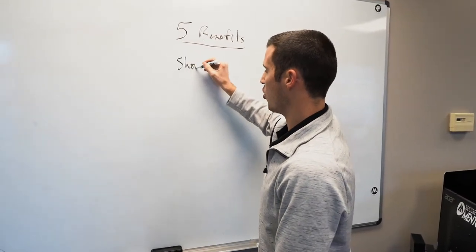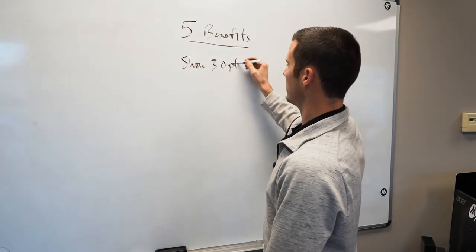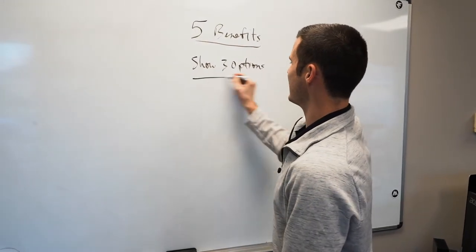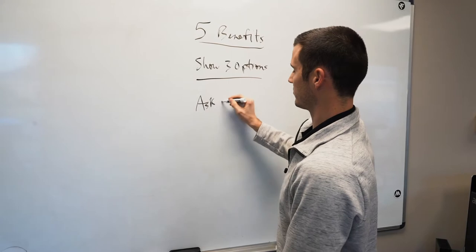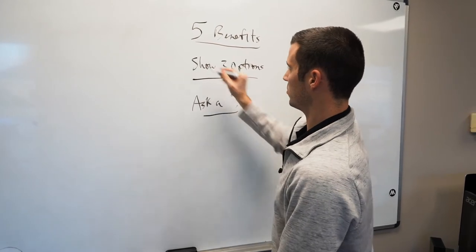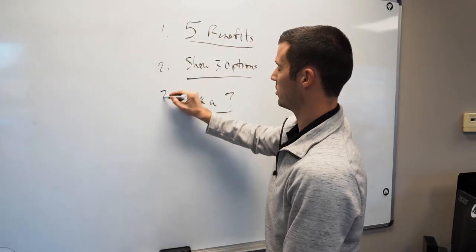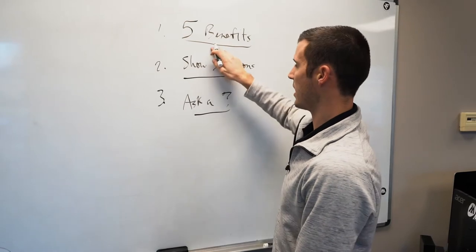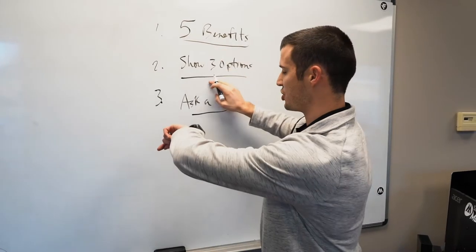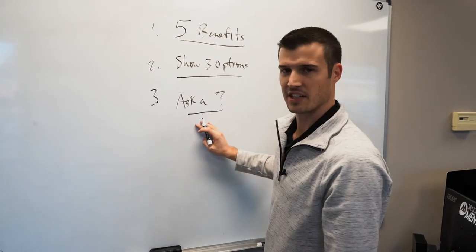Then I show three options and then I ask a question, right? So one, two, three. I go over five benefits. I show three options and then I ask a question.